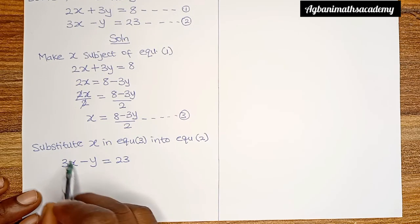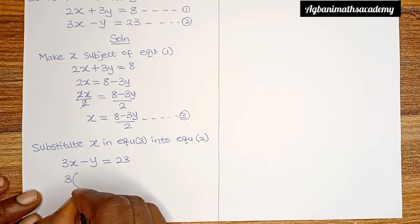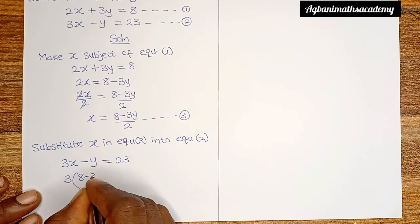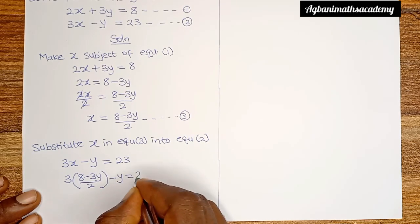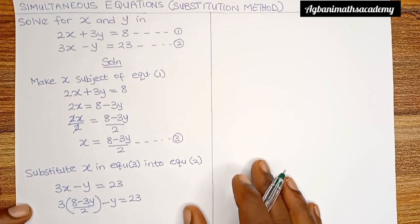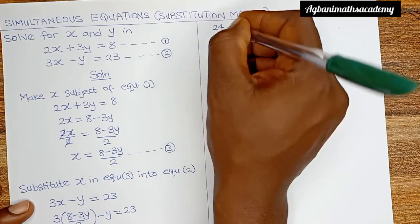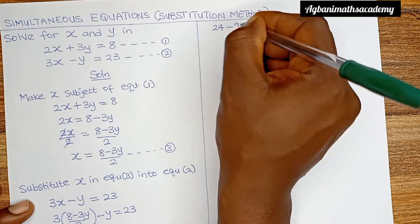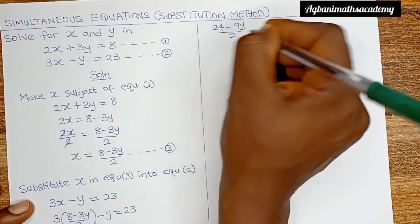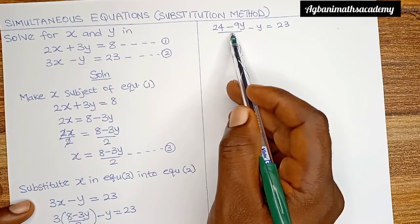Where we have x, we remove x and put 8 minus 3y. So 3 times 8 minus 3y all over 2, minus y, is equal to 23. Continuing, 3 is going to multiply the numerators. We have 24 minus 9y all over 2 minus y is equal to 23.